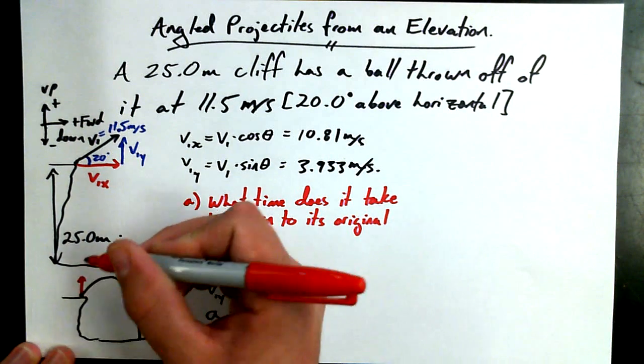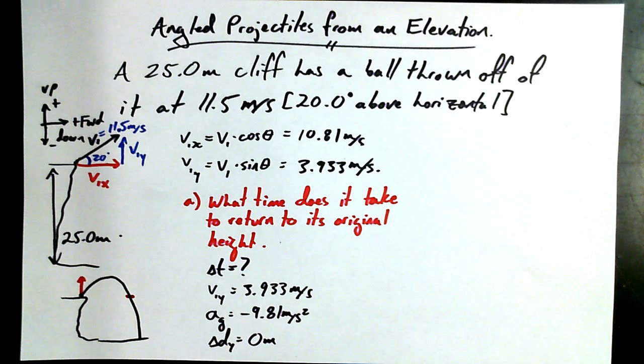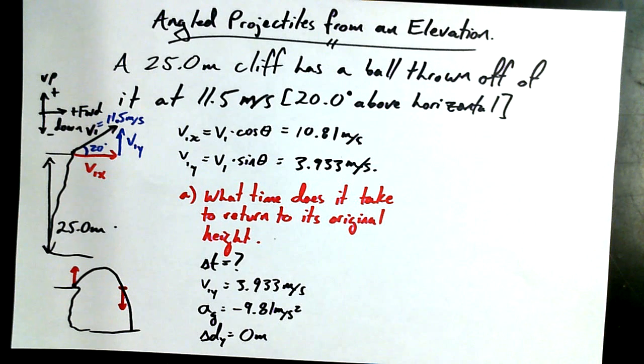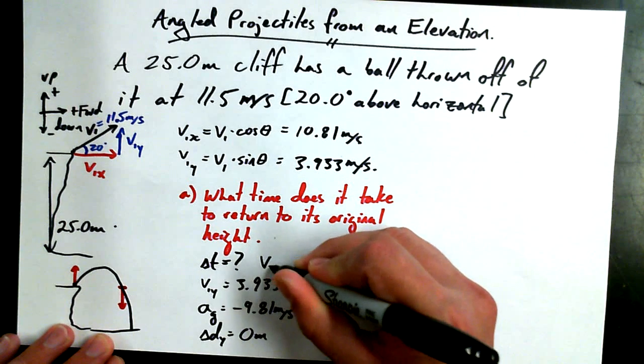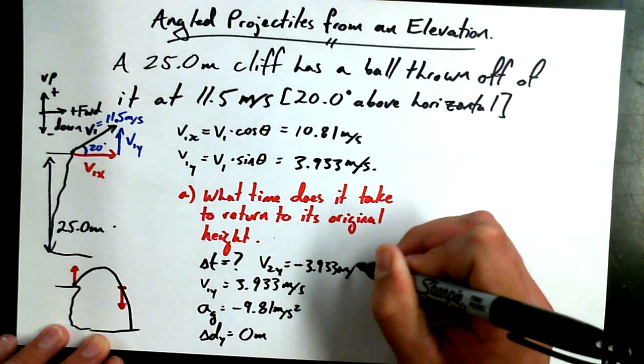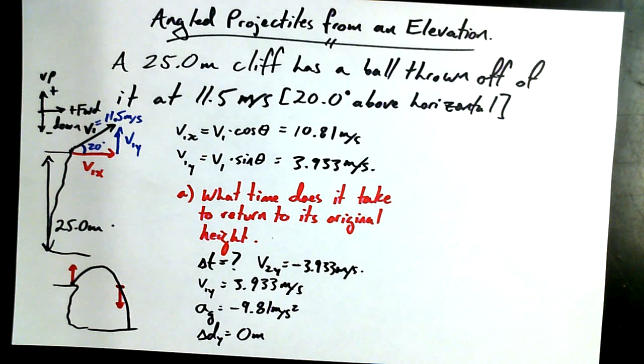There's actually one other piece of information here that you could make based on a symmetry argument. If I have V1y going this way, what do I know about V2y at the point that it arrives at its original height? They should be the same magnitude, but opposite directions, right? Because what goes up must come down. So by a symmetry argument, we've got the same magnitude but opposite direction. So we could say if we know V1y, then we also know that V2y is equal to negative 3.933 meters per second.